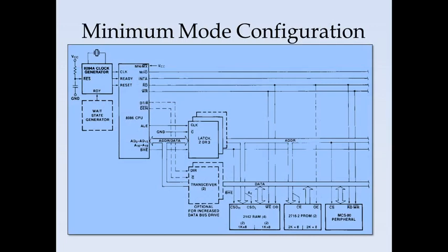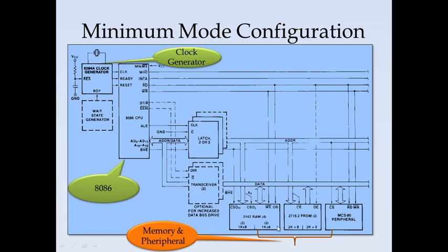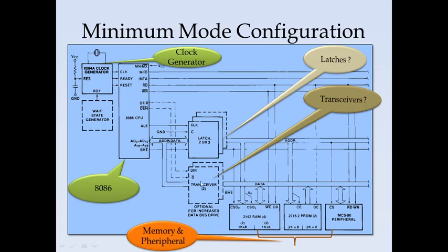In the minimum mode configuration, the pin MN/MX bar is connected to VCC, assuming it is a single processor configuration. Here we have the 8086 microprocessor and the clock generator. The clock generator provides the clock signal for the 8086 and also supplies the ready and reset signals for the 8086 to start processing. The microprocessor is connected to the RAM, ROM, PROM, and the peripherals. The address and data lines are connected to these peripherals, and between the microprocessor and the peripherals we have latches and transceivers.